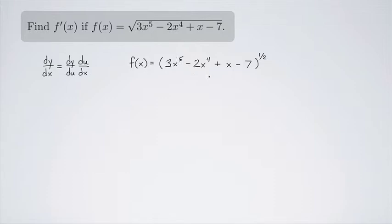Now you can see that this thing is inside and that 1 half power is the outside. And so the way you do chain rule is you take the derivative of the outside function first, leaving the inside alone, and then multiply it by the derivative of the inside.